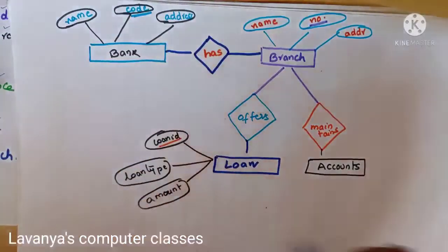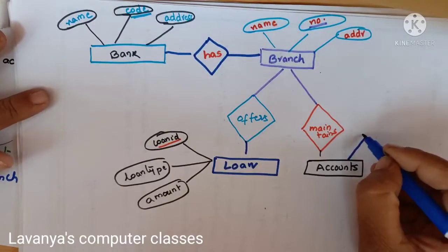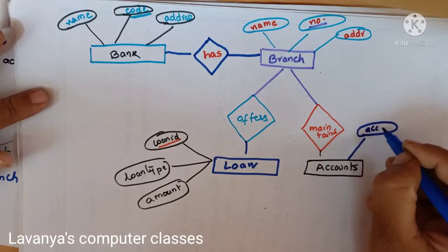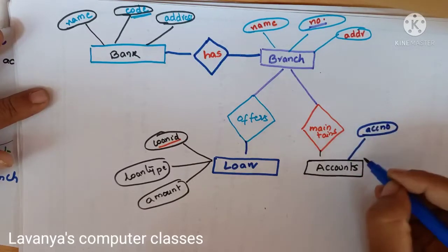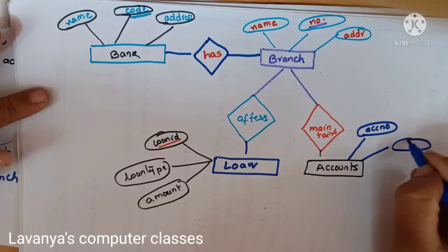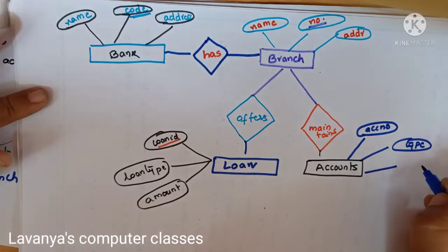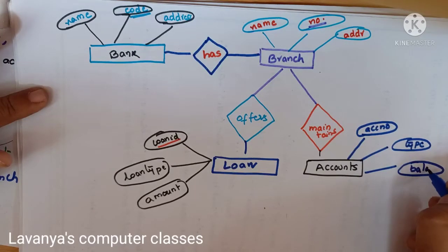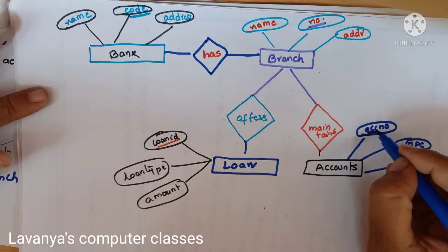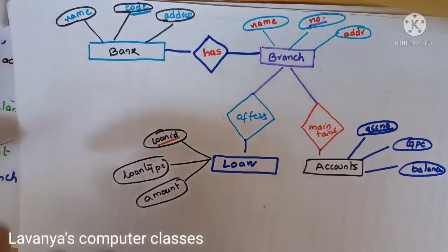Now for accounts — the attributes of accounts are: account number, account type, and balance. Account type refers to whether it is a savings bank or current account. Account number is the primary key attribute.